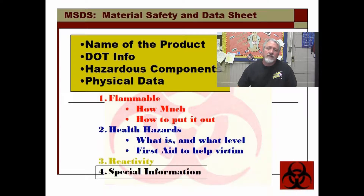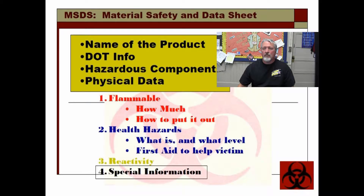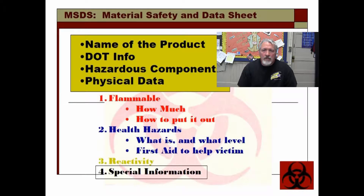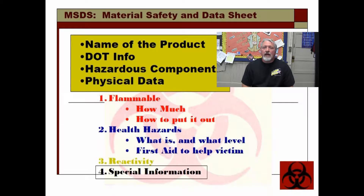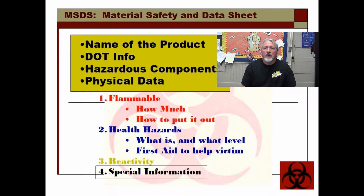The main parts of an MSDS are the name of the product — not just the common name you see on the store shelf, but also the more advanced chemical name. Then DOT information, Department of Transportation information: how this is legally transported to get to the shelves where it's sold or to the clinic where it's used. Then identifying the hazardous components — what inside it is hazardous, what portion of the product can cause harm.